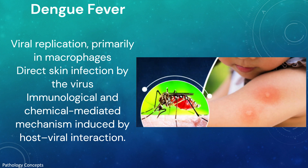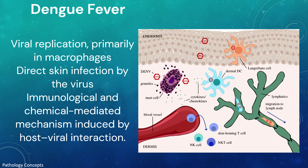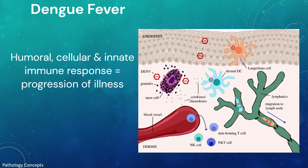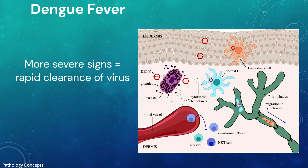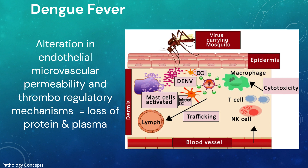The proposed etiologies for dengue virus infection include virus replication primarily in macrophages, direct skin infection by the virus, and immunological and chemical-mediated mechanisms induced by host-viral interaction. Dengue virus gains entry into the host through the skin following an infected mosquito bite. Humoral, cellular, and innate host immune responses are implicated in progression of illness, with the more severe clinical signs occurring following rapid clearance of the virus from the body.